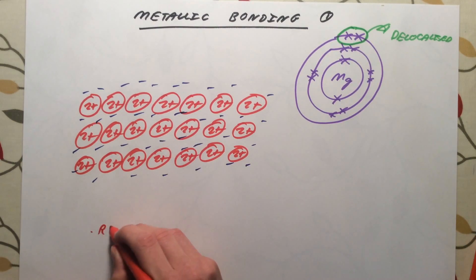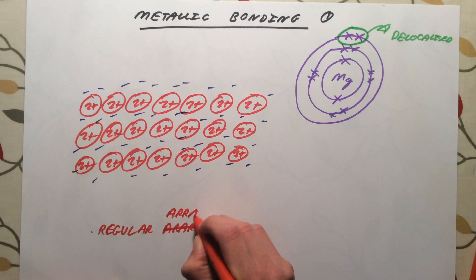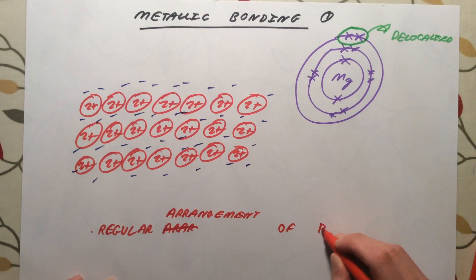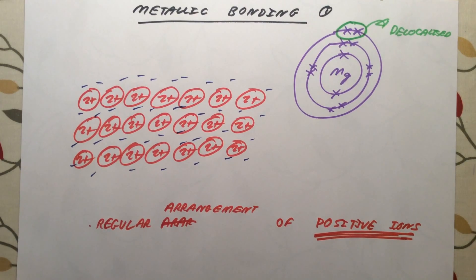So just to recap, we have a regular arrangement, or a lattice. This is a regular arrangement of positive ions. You must say positive ions, or cations. You must say positive ions in your exam. Do not say atoms. Do not say particles. They are called a regular arrangement of positive ions.